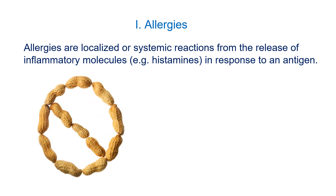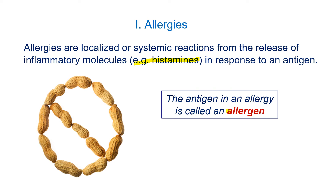The first type of hypersensitivity we want to discuss are allergies. Allergic diseases include all sorts of allergies — food allergies, asthma, eczema — and these diseases can be localized, maybe just a patch of skin, or they can be systemic and life-threatening. Allergies involve histamines causing inflammation. A key term here is allergen — an allergen is basically what the body is reacting to; it is the antigen in the case of an allergy.